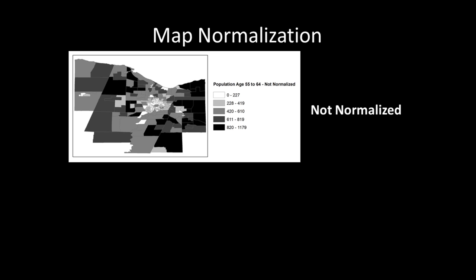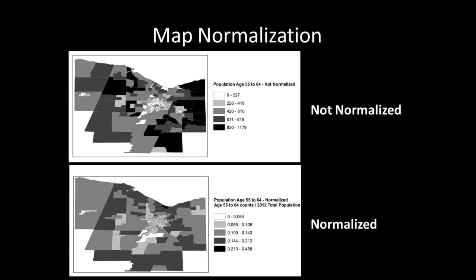In the top figure, raw counts of people age 55 to 64 are shown at the census tract level. In the bottom figure, the exact same data is shown using the exact same color scheme, except this time the data are normalized by dividing the 55 to 64 raw counts by the total number of people living in each census tract. The map legend for this bottom map shows the percentage of people age 55 to 64 living in each census tract. The bottom map gives a more accurate picture, as in many cases they are a small percentage relative to the overall census tract population, which cannot be easily determined using raw counts alone as shown in the top figure.